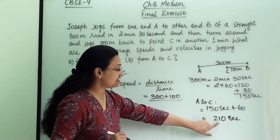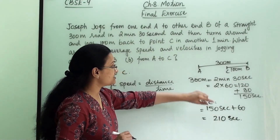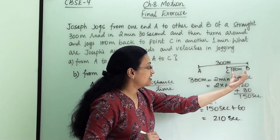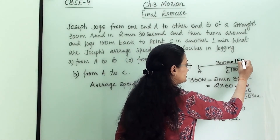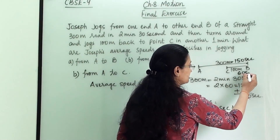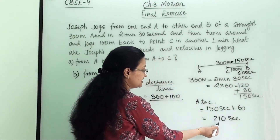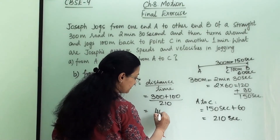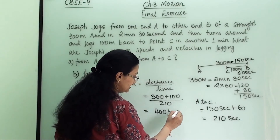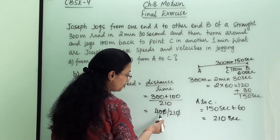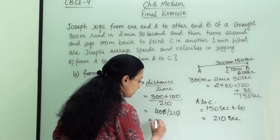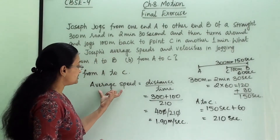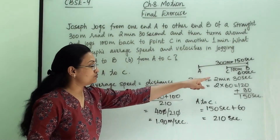Total time is 210 seconds — that is, 150 seconds for A to B and 60 seconds for B to C added together. So average speed = 400 ÷ 210. Simplifying by canceling a zero: 40 ÷ 21 = approximately 1.90 meters per second. That is the average speed for the A to C patch.